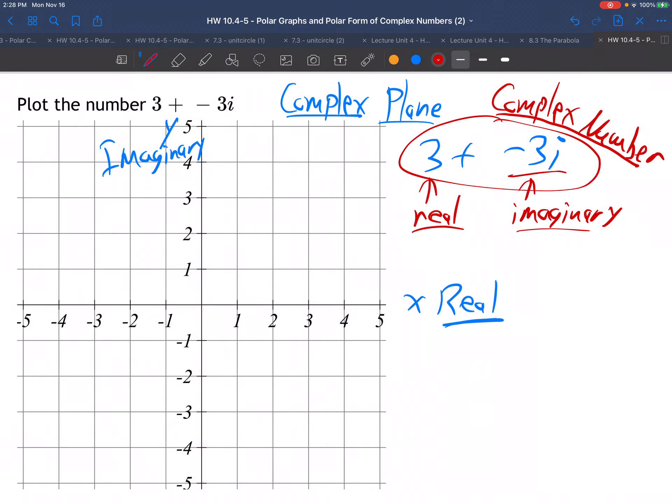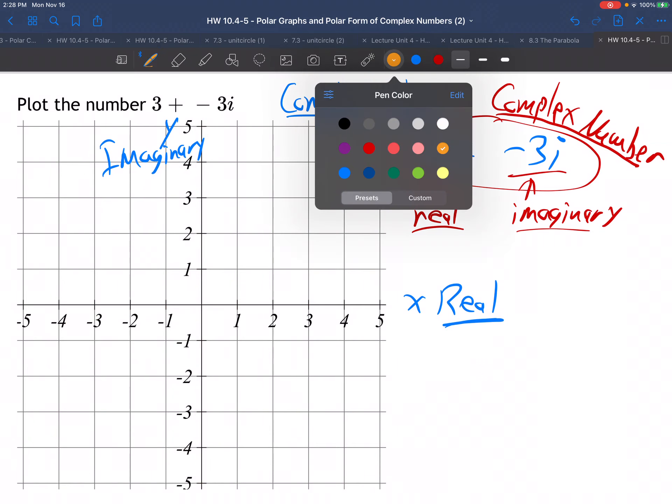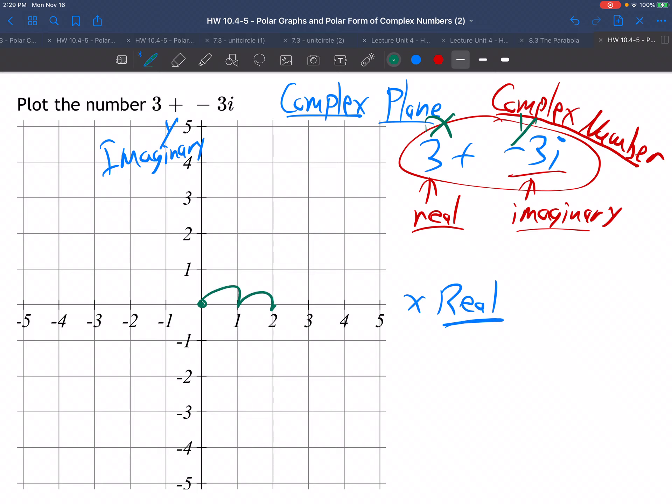So you treat it just like an x-y coordinate. In other words, this is like x and this is like y. So starting from the origin, you go right 3, because that's positive 3. And then down 3, 1, 2, 3, because that's negative 3.